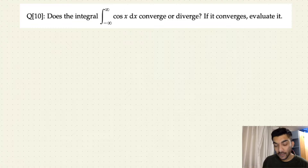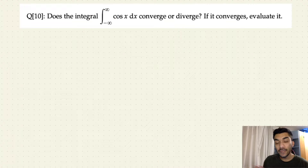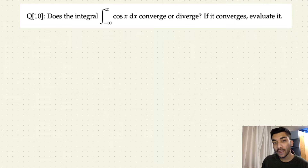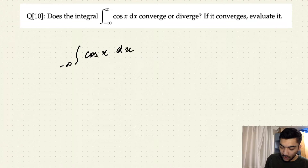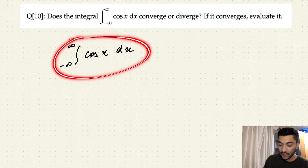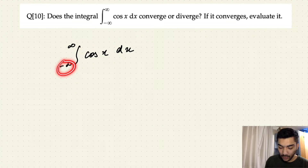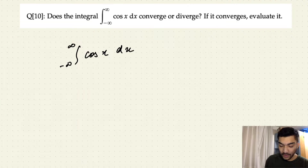Since there are only two discontinuity points, we always split those definite integrals into multiple parts such that each definite integral has at most one discontinuity point in the interval specified. So what we'll have to do is split the integral of cos x dx from minus infinity to infinity into two parts, such that we only have the minus infinity discontinuity for one definite integral and the infinity discontinuity for the other.